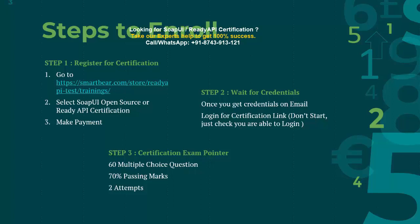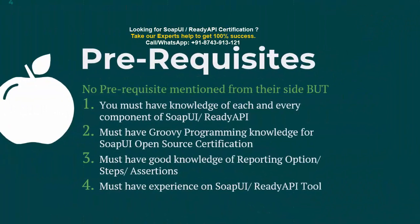Here are a few details about the certification: you will get 60 multiple choice questions, passing marks would be 70 percent, so out of 60 you will have to clear at least 42 questions. There will not be any negative marking. You will get two attempts to clear it — if you are not able to clear it the first time, you get one more attempt. But if you fail both attempts, you will have to register and pay again.